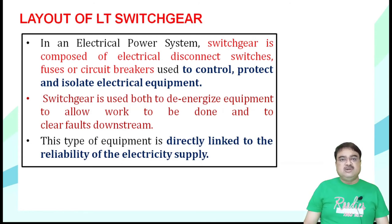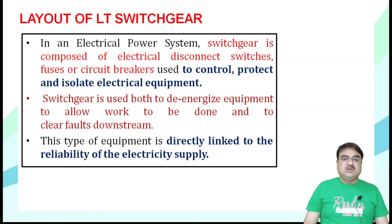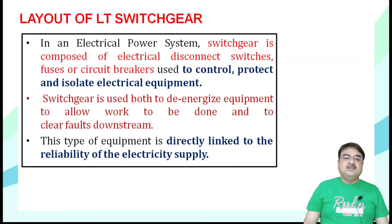Our switchgear is in automatic condition. You may have seen that where there is an overload or a short circuit, the automatic supply is turned off — you will see that our MCB is off. If automatic switchgear is not present and a short circuit occurs, a lot of current flows and the whole line wire gets damaged by the heavy current.